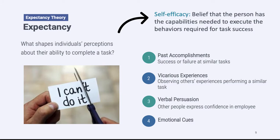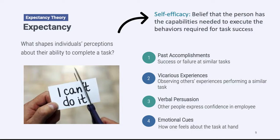The last component of self-efficacy is called emotional cues — basically how your body tells you how you're feeling about a task at hand. If every time you think about a project your stomach aches, you get really anxious, or you have a sinking feeling in your gut, that tells you that you're lacking some self-efficacy. Your body gives you cues about whether you're feeling confident. On the other hand, if you think about a job interview and you feel excited, happy, or hopeful, those positive emotional cues tell you that you have high self-efficacy.